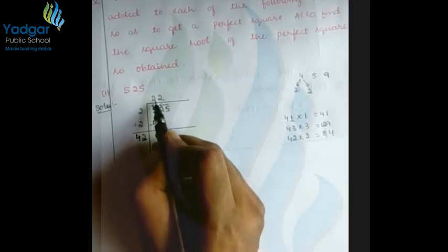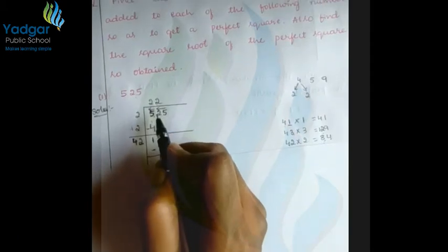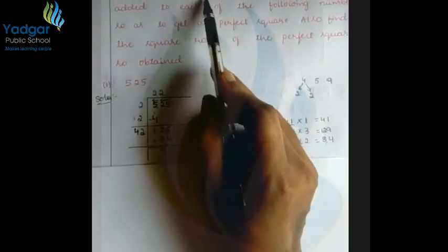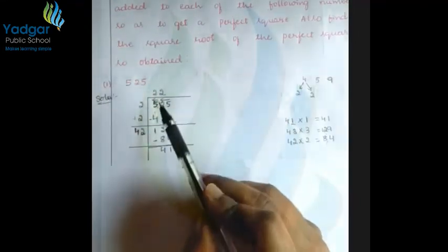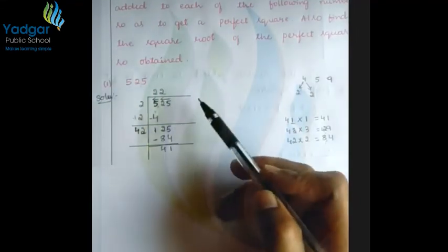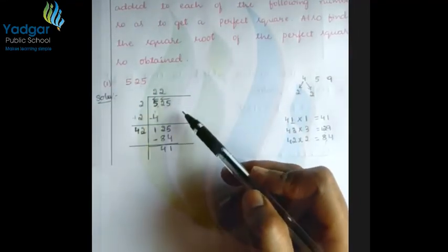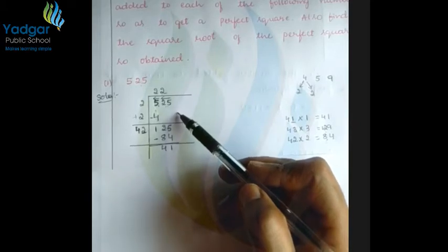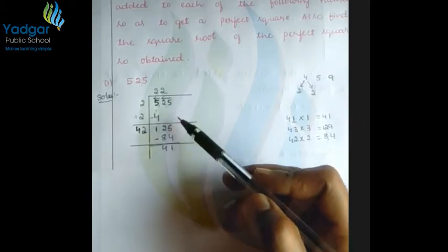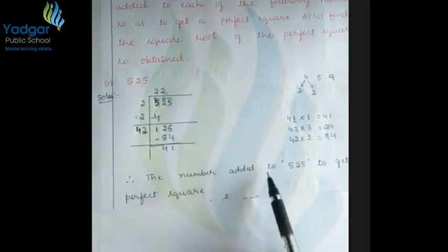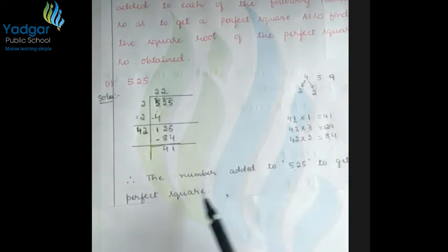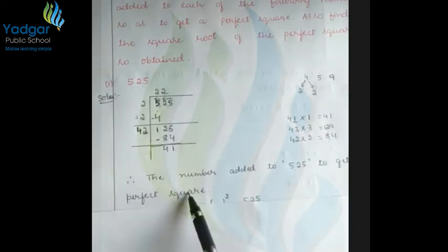We got 22 as the quotient. Now we have to find the smallest number to be added to 525 to get a perfect square. The number added to 525 to get a perfect square is determined as follows.